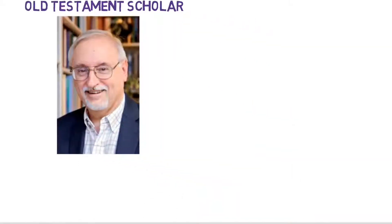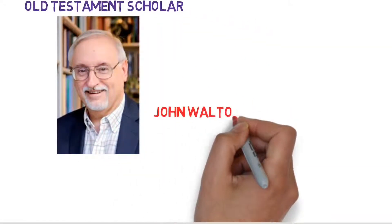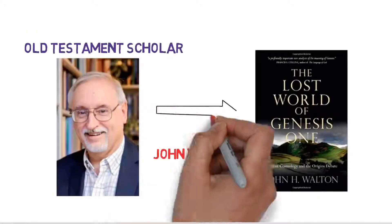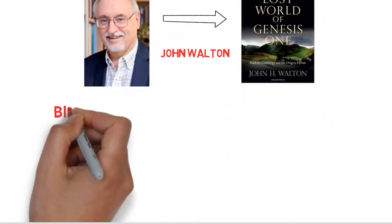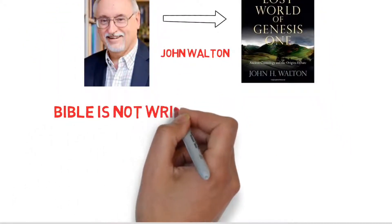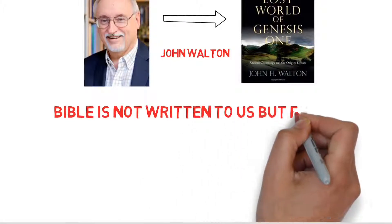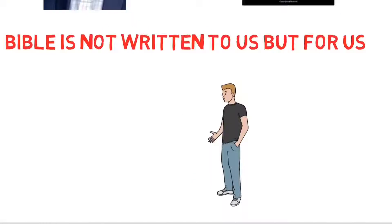John Walton, an Old Testament scholar, in his book The Lost World of Genesis, wrote: Bible is not written to us, but for us. You will be saying, what does that mean?